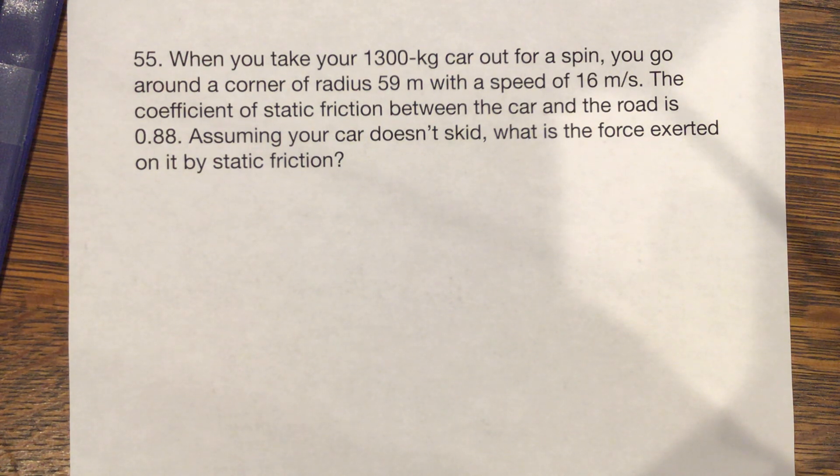When you take your 1300 kilogram car out for a spin, you go around a corner with a radius 59 meters with a speed of 16 meters per second. The coefficient of static friction between the car and the road is 0.88. Assuming your car doesn't skid, what is the force exerted on it by static friction?